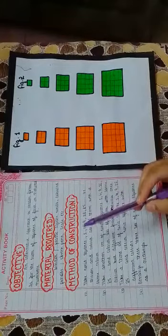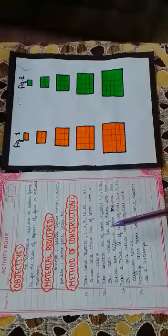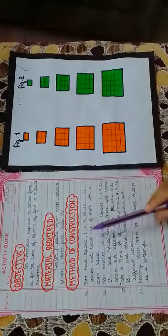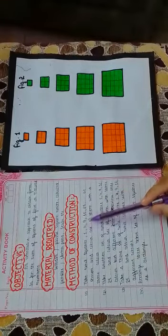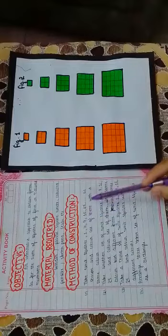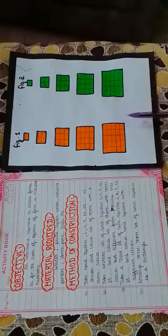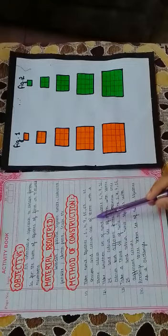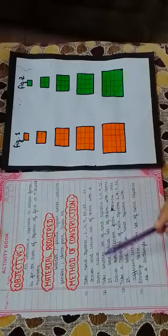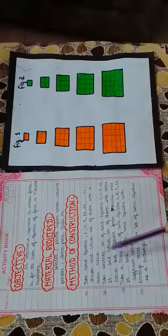To commence with the method of construction, take unit squares 1, 4, 9, 16, 25 as shown in the diagram and color all of them with the same color.